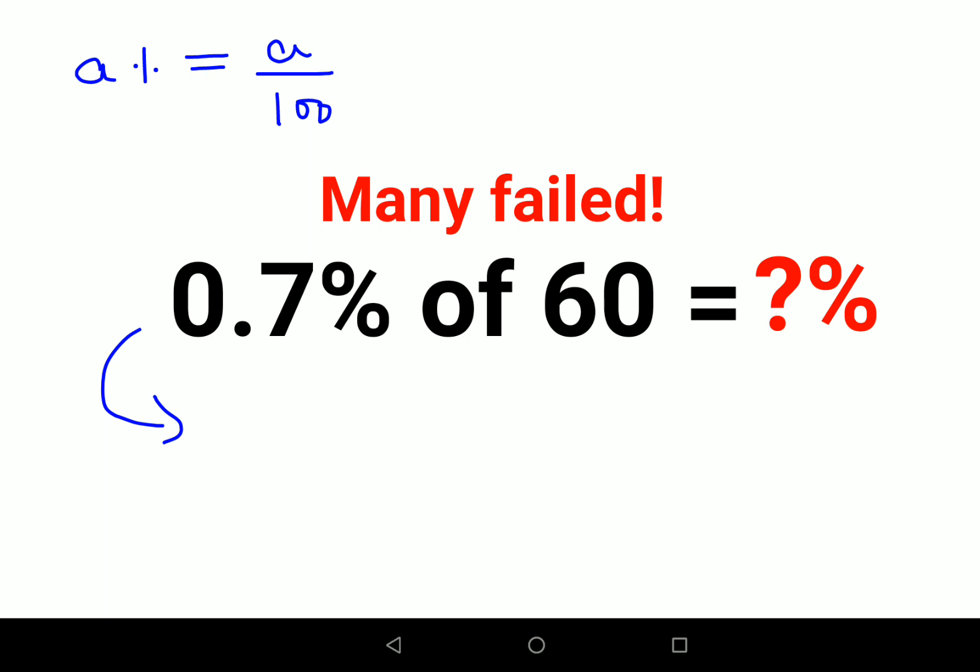So here this will look like 0.7 upon 100, of stands for multiplication, into 60.